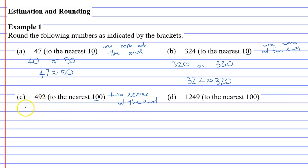If it's going to have two zeros at the end, it's either going to be 400 or 500. Notice that we've got four hundreds or five hundreds, hence why we say to the nearest 100. And 492 out of these two numbers is closer to 500, so it's approximately 500.